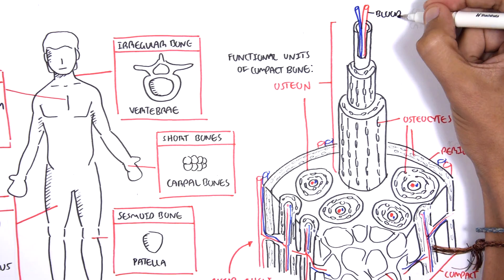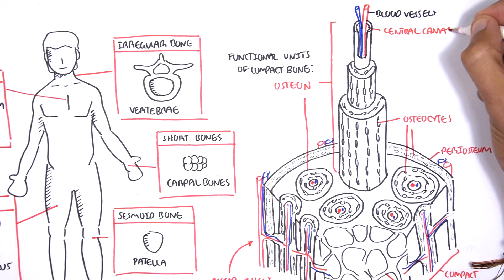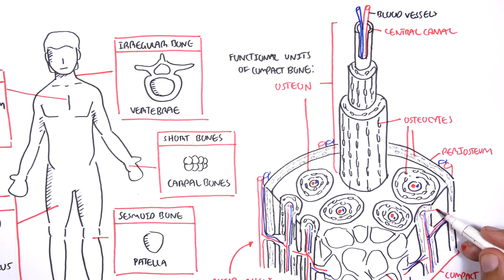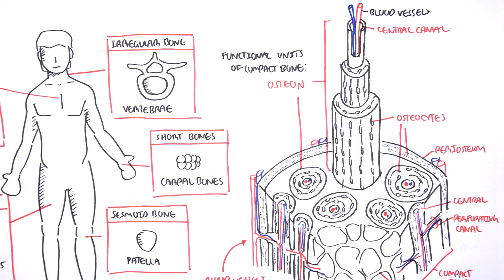If we pull out one of these osteons, we can find the central canal, which houses blood vessels. And this is how the bone stays nourished.